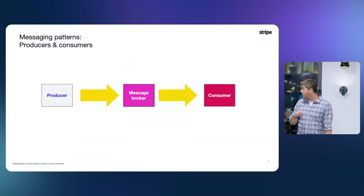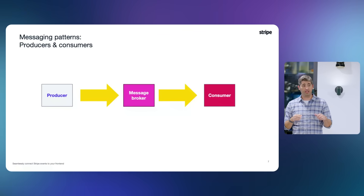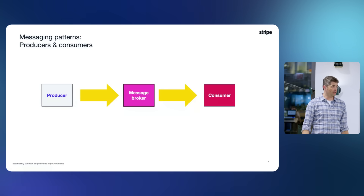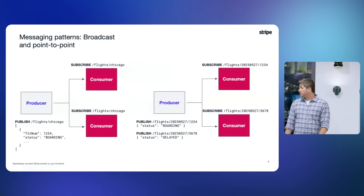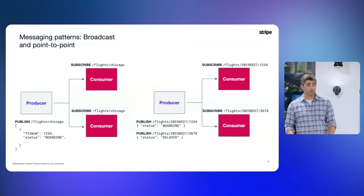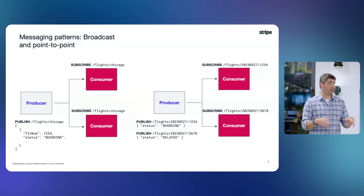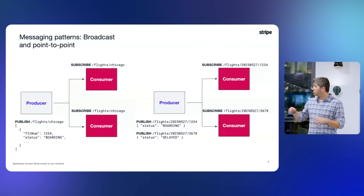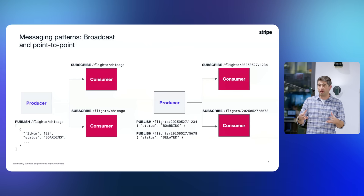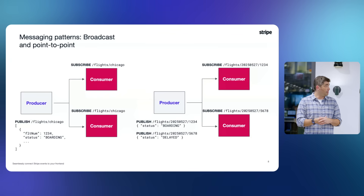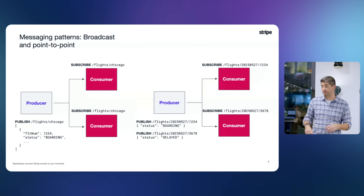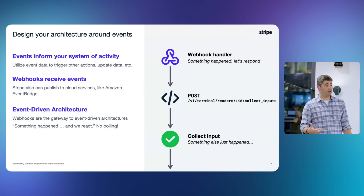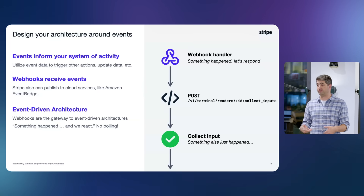A little bit of terminology: when we talk about messaging we generally have producers who create events, a message broker that passes them on, and a consumer that receives them. There are also two different messaging patterns I want to think about: broadcast — telling anybody who's interested about all flights in or out of Chicago — and point-to-point, where you're targeting something very specific, maybe messaging just one person, like your food delivery showing up at your door.